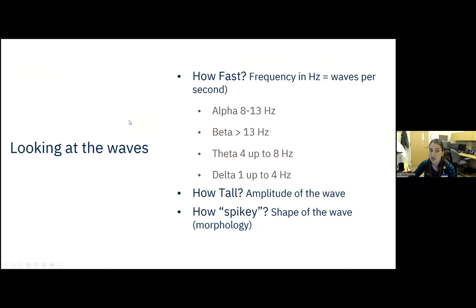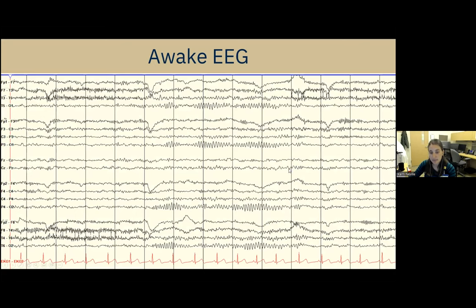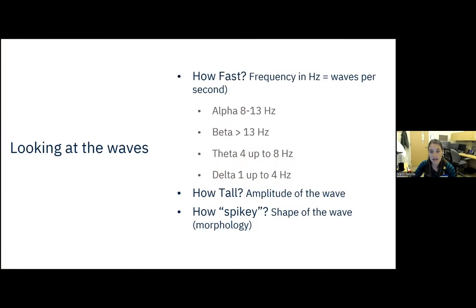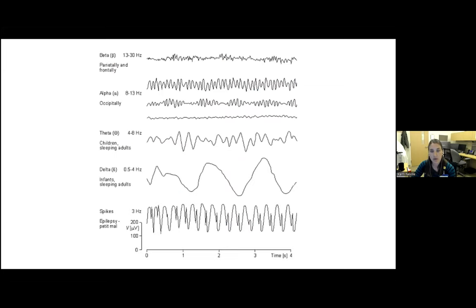Going back to our example, there are no spikes or sharps on this page. The amplitudes - the heights of the waves - are pretty equal comparing the left and right sides of the brain, meaning it's very symmetric. That's squiggly lines 101: what we're looking at when someone's just awake, relaxed, and we're recording their brain waves.